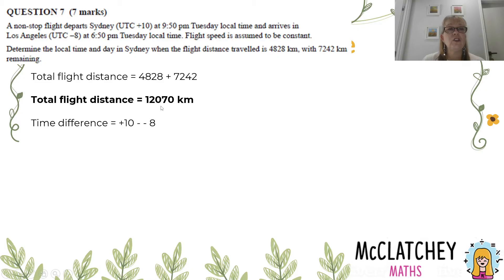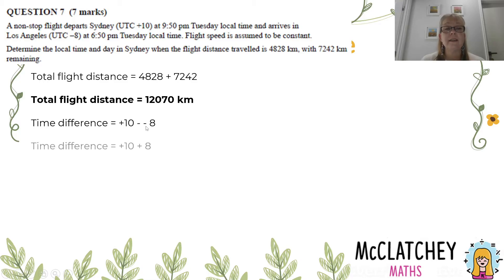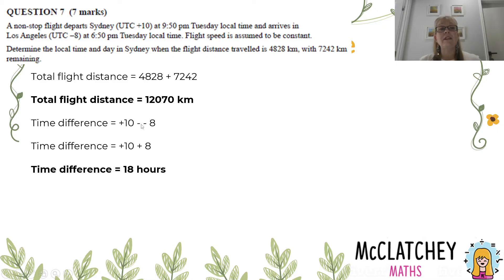Let's look at the time difference between Los Angeles and Sydney. One is at UTC plus 10, the other is at UTC minus 8. The time difference means we subtract, and negative minus negative makes a positive, so 10 plus 8 means we've got an 18-hour difference between Sydney and Los Angeles.